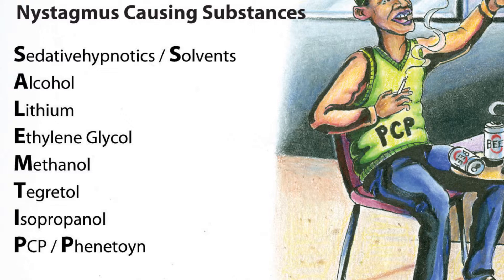L is for lithium. M is for methanol. T is for Tegretol, or thiamine deficiency. We see thiamine deficiency with Wernicke's syndrome — the ophthalmoplegia, confusion, and ataxia.